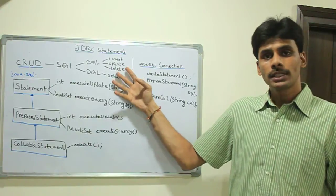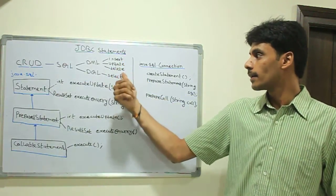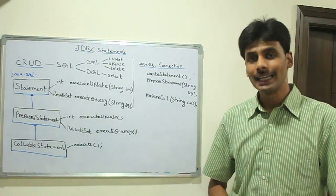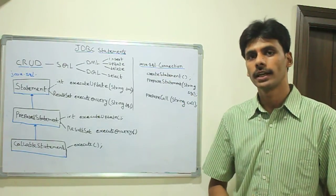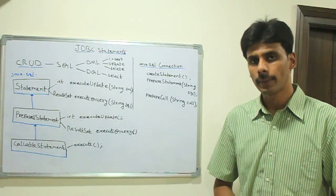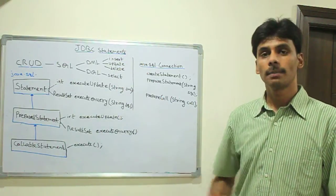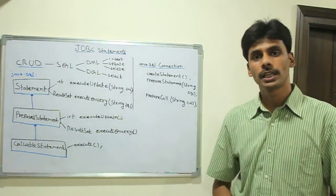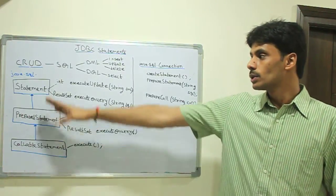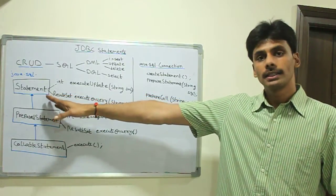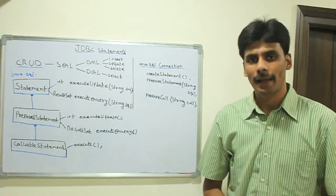The corresponding SQL statements for the CRUD operations are INSERT, SELECT, UPDATE, and DELETE. You can use these statements to delete data or update data in the database. To execute these four DML and DQL statements from within your Java program, we use the statement interfaces available in the JDBC API.